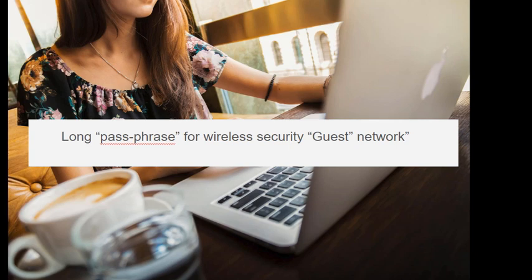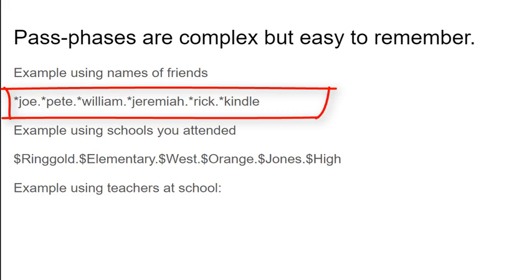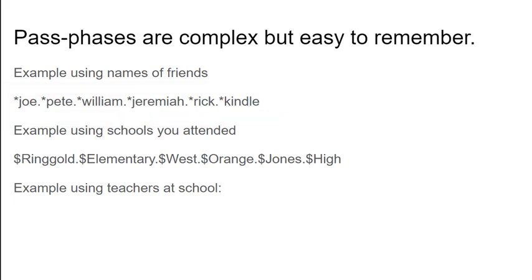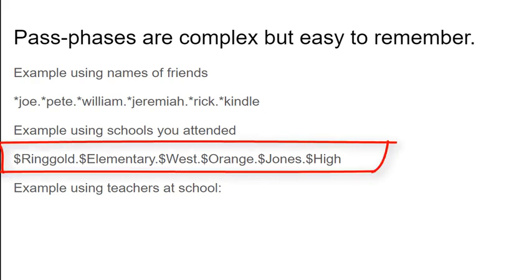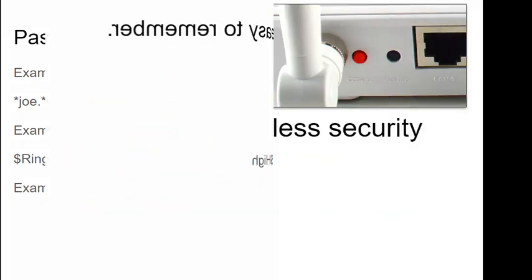To connect to your wireless, you'll use a password — technically called a WPA shared key. I recommend not using passwords but passphrases. Passphrases are complex but easier to remember. For example, using names of friends: asterisk-joe-dot, asterisk-pete-dot, asterisk-william-dot — using names I can remember easily while adding complexity with dots and asterisks, making it long, complex, and easy to remember. You can also use schools you attended: dollar-sign-ringle-dot, dollar-sign-elementary-dot, dollar-sign-west. A passphrase is something complex but easy to remember — that's what you want to use for your wireless.